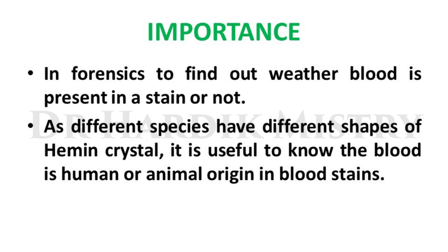The importance of this practical in forensics is to determine whether blood is present in a stain. If a red color stain is found on cloth, the hemin crystal test can confirm whether the red color contains blood or some other chemical. Additionally, since different species have different shapes of hemin crystals, it is useful to determine whether the blood is of human or animal origin in blood stains.